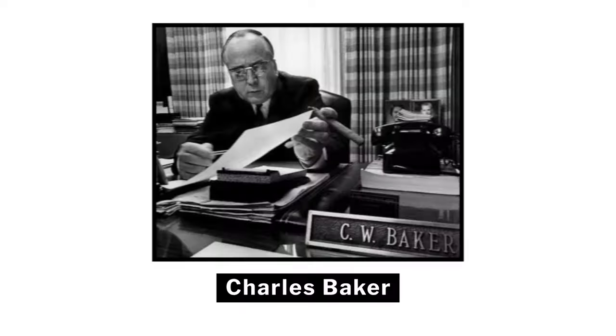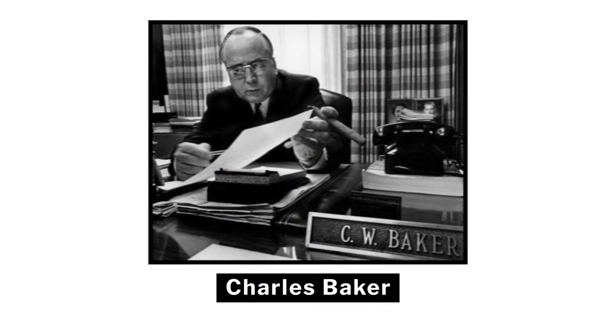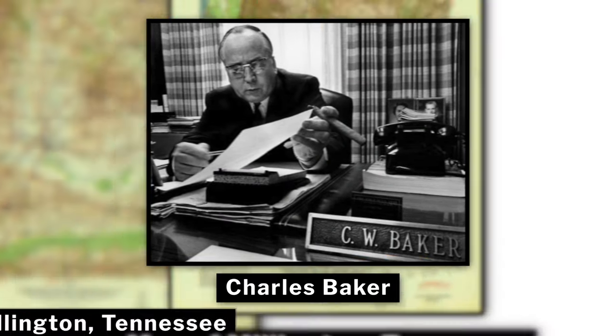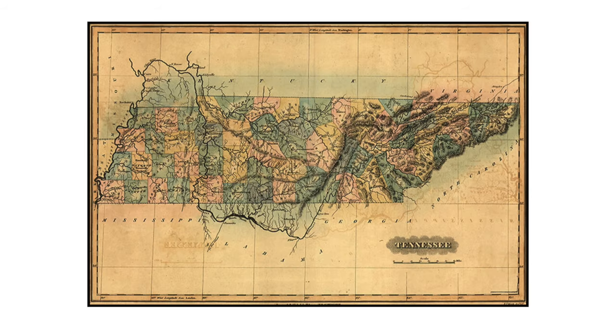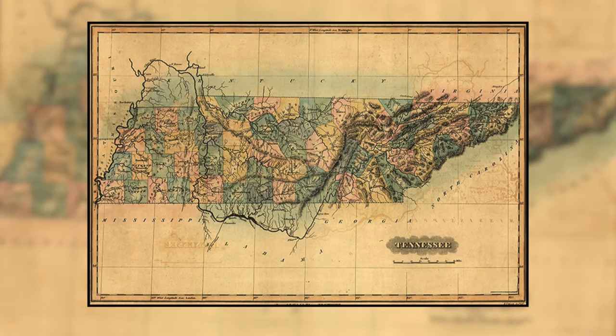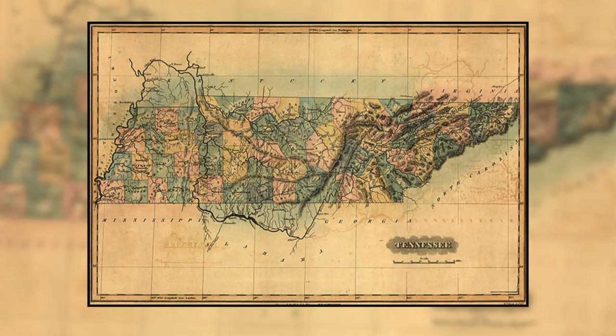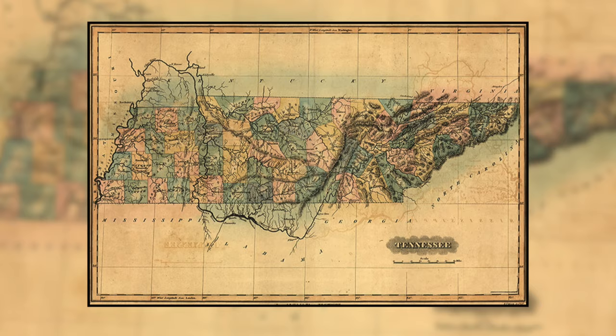At the time of the case, Charles Baker was the Republican mayor of the urban district of Millington, Tennessee, which had approximately 10 times as many residents as some of the state's rural districts. So even though the population of his county far outweighed the surrounding areas, the votes from those rural counties were overrepresented due to the lack of redistricting.